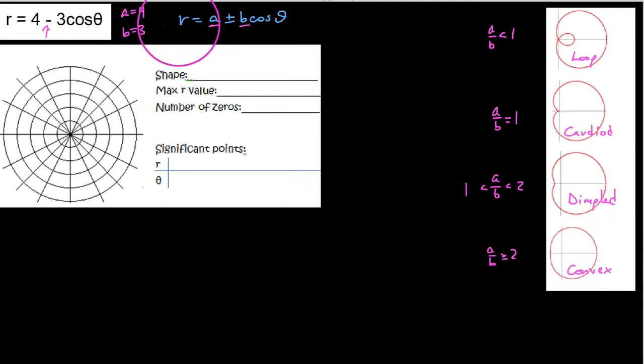So the first thing I want to do is kind of attempt to diagnose what this is here. We get a over b in this case, a over b is equal to 4 thirds. So I notice that that is actually bigger than 1, but it's less than 2. So what we're going to get here is a dimpled type limaçon.